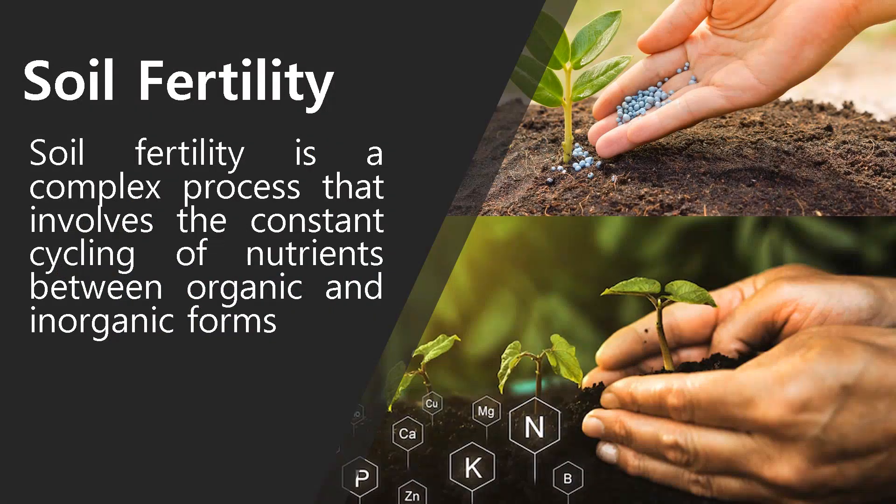Soil fertility is a complex process that involves the constant cycling of nutrients between organic and inorganic forms. All living organisms need nutrients to perform their functions. Different living organisms take up nutrients in different forms and may also have different nutrient requirements. Animals fulfill their energy requirements by taking carbohydrates, fats, and proteins, whereas plants obtain energy from light by using inorganic elements. Plants can take up a large number of chemical elements; however, only 17 elements are considered essential for plants and these are called plant nutrients.